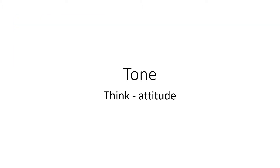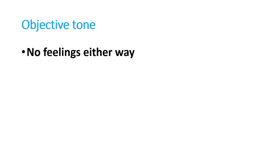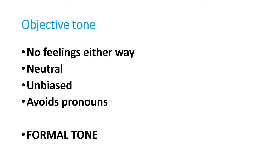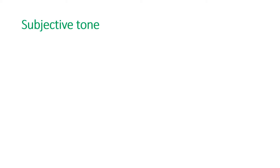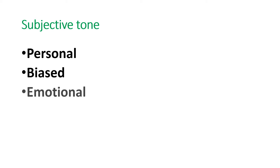For tone, I want you to think attitude. When you're looking at a piece of reading in Functional Skills, think: what is the writer's attitude towards the subject? When you write, think about what's my attitude towards what I'm writing about. The objective tone has no feelings either way — neutral, unbiased, avoids pronouns, and is considered the formal tone. The subjective tone is personal, biased, emotional, and usually informal. Make sure you know the difference between objective and subjective tones.